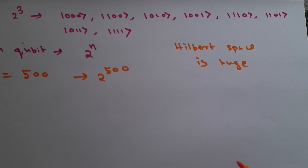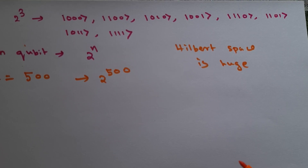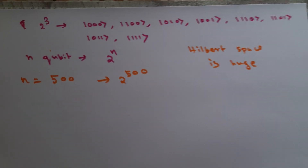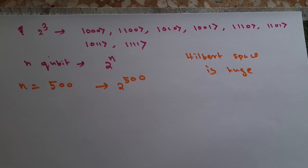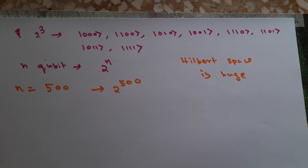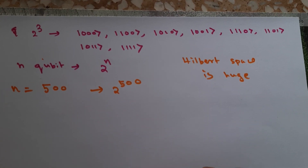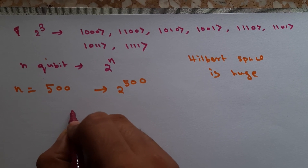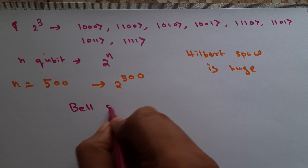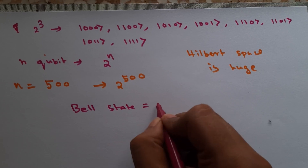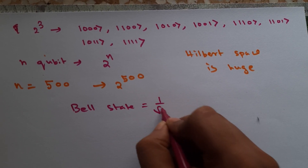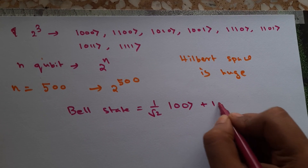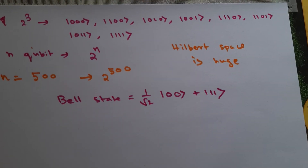There is also a special two-qubit state called the Bell state, represented as (1/√2)(|00⟩ + |11⟩). This is a very special state.